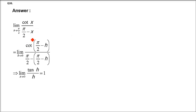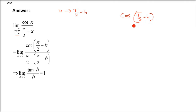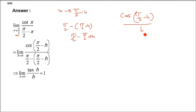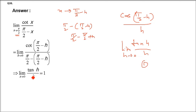Question 36: limit x→π/2 of cot(x)/(π/2 - x). Replace x by π/2 - h. The denominator π/2 - x = π/2 - (π/2 - h) = h. cot(π/2 - h) = tan(h). So the expression becomes tan(h)/h, and limit h→0 of tan(h)/h = 1.